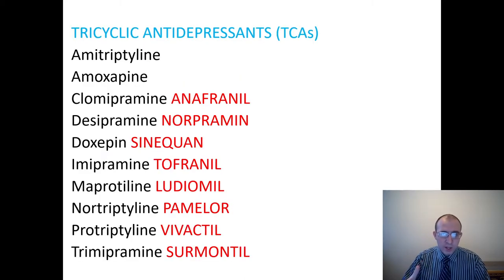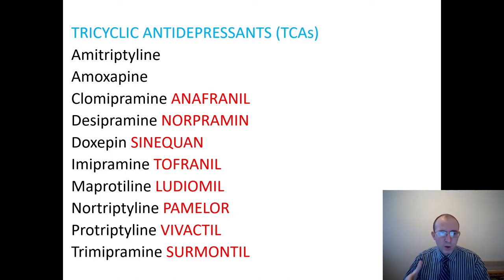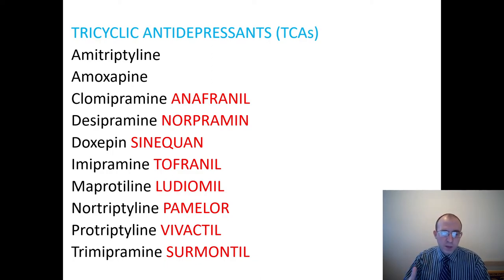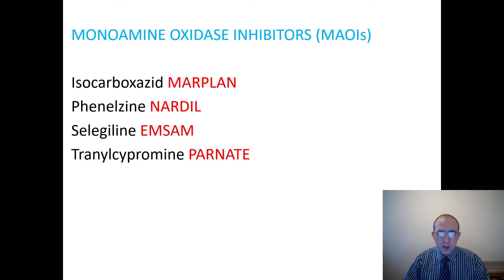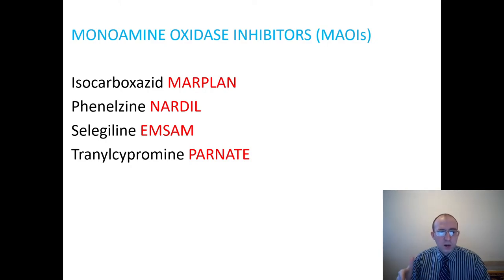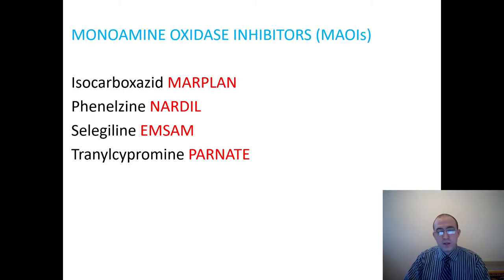Tricyclic antidepressants include amitriptyline, amoxapine, clomipramine, desipramine, doxepin, imipramine, maprotiline, nortriptyline, protriptyline, and trimipramine. The next group is monoamine oxidase inhibitors: isocarboxazid, phenelzine, selegiline, and tranylcypromine.